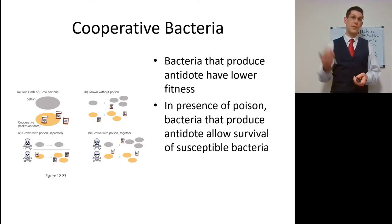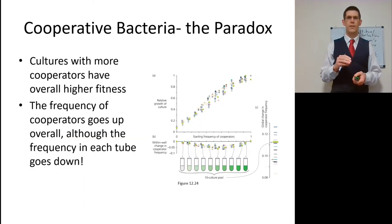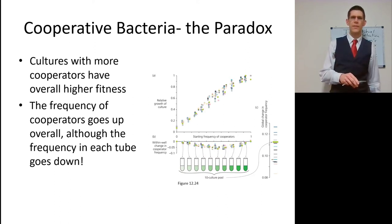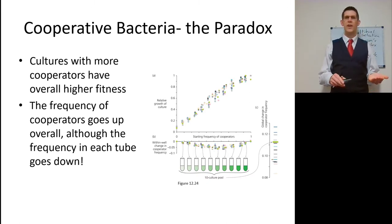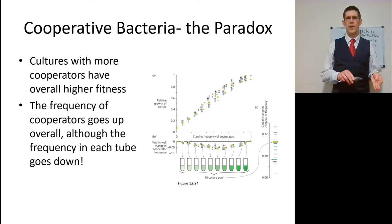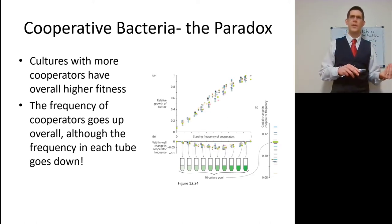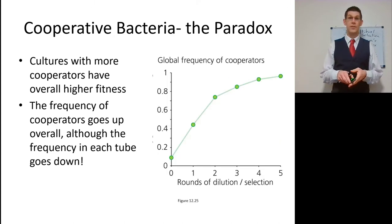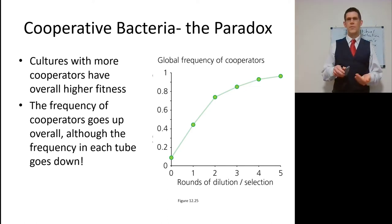This is the exact same thing: the cooperative ones within the group don't do as well. But the paradox is that cultures with more cooperators have higher whole-culture fitness. You can see the starting frequency of cooperators going from light green — very few — to darker green — very many. The relative growth of that culture on the y-axis is highest where there are the most cooperators. Within each well, there's a negative change in cooperative frequency. But over generations, with rounds of dilution each generation, the frequency of cooperators moves from 0.1 to about 1. This is Simpson's paradox in action.